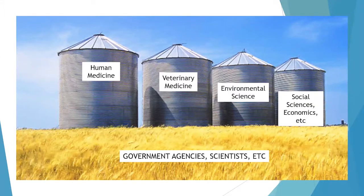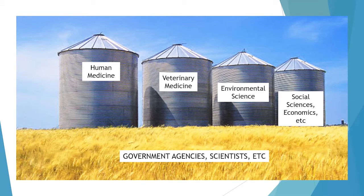Traditionally, government agencies and scientists worked in silos: those who cared about human health in one silo, animal health in another, and environmental health in a third, with very little communication across those three domains. What we've realized now is we need to break down those walls and allow physicians, veterinarians, environmental scientists, and all others involved to communicate freely in order to identify problems and solutions that affect all three. More recently, we've also recognized the need to be more inclusive — our One Health umbrella needs to include social scientists who help us understand behavior change, and economists who are really good at helping us use limited resources in impactful ways.